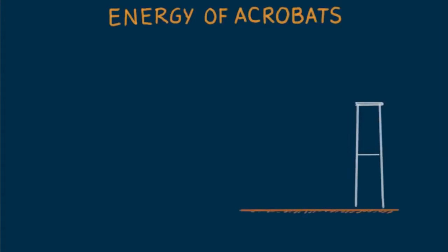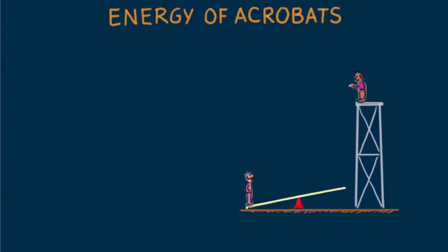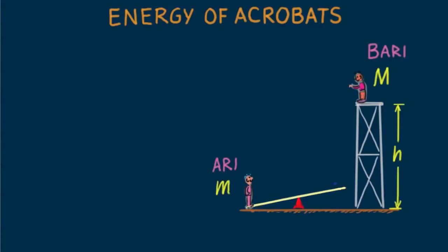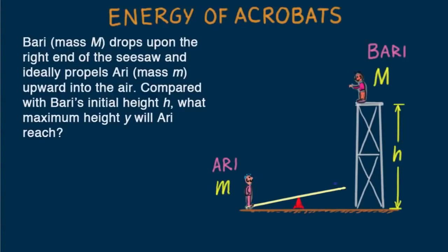Here's an intriguing problem with a simple solution if conservation of energy is invoked. Acrobat Bowery stands atop an elevated platform, steps off, and lands on the end of a seesaw that propels his friend Ari into the air. Bowery, mass big M, drops upon the right end of the seesaw and ideally propels Ari, mass little m, upward. Compared with Bowery's initial height H, what maximum height Y will Ari reach?